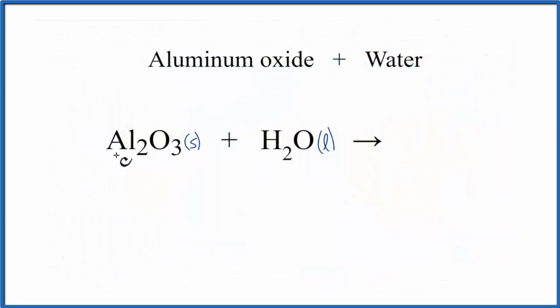And we can now say that nothing happens. We put our Al2O3 in water. It sinks to the bottom, and that's where it stays. There's no reaction. There's no dissolving. Aluminum oxide is insoluble in water.